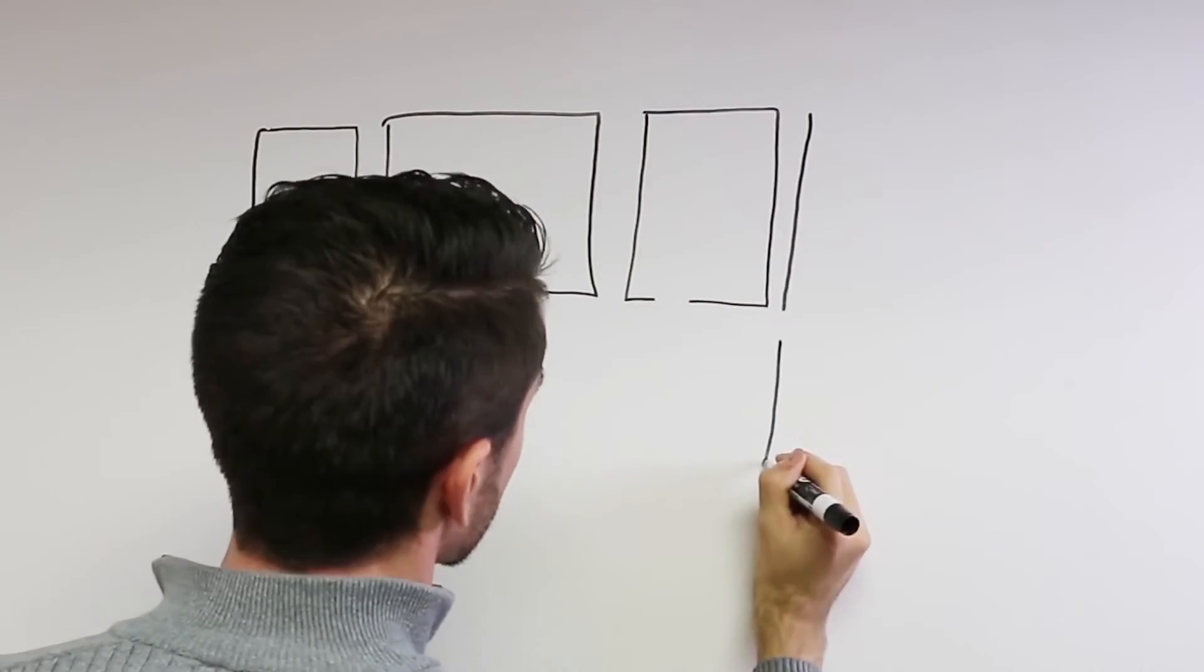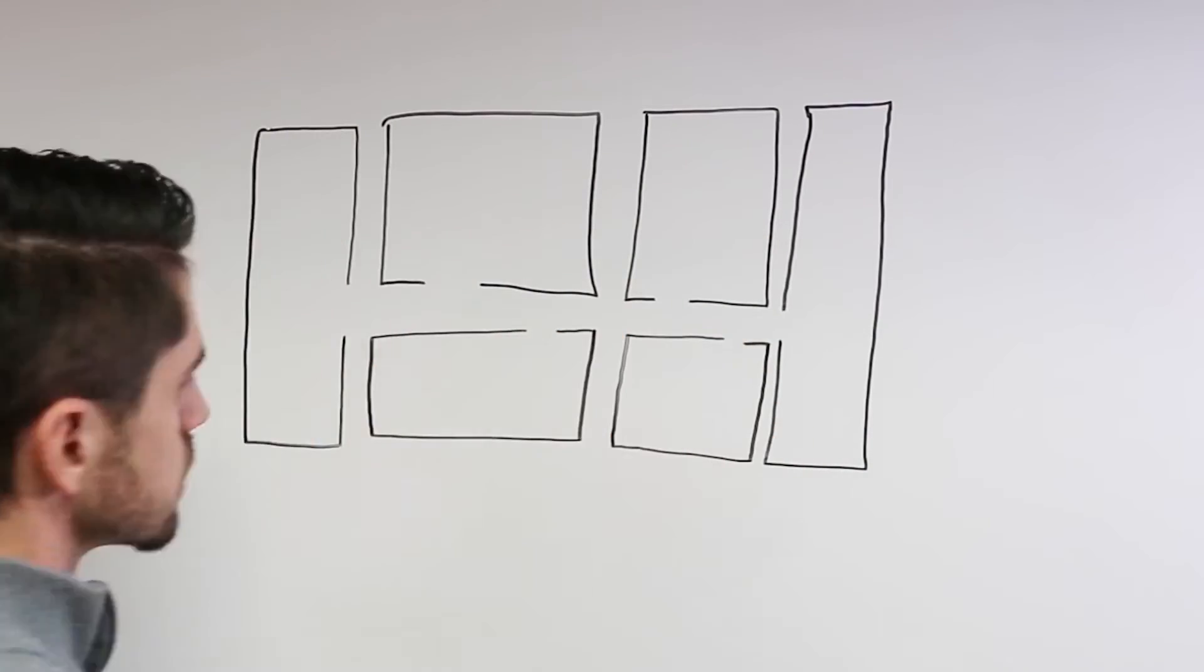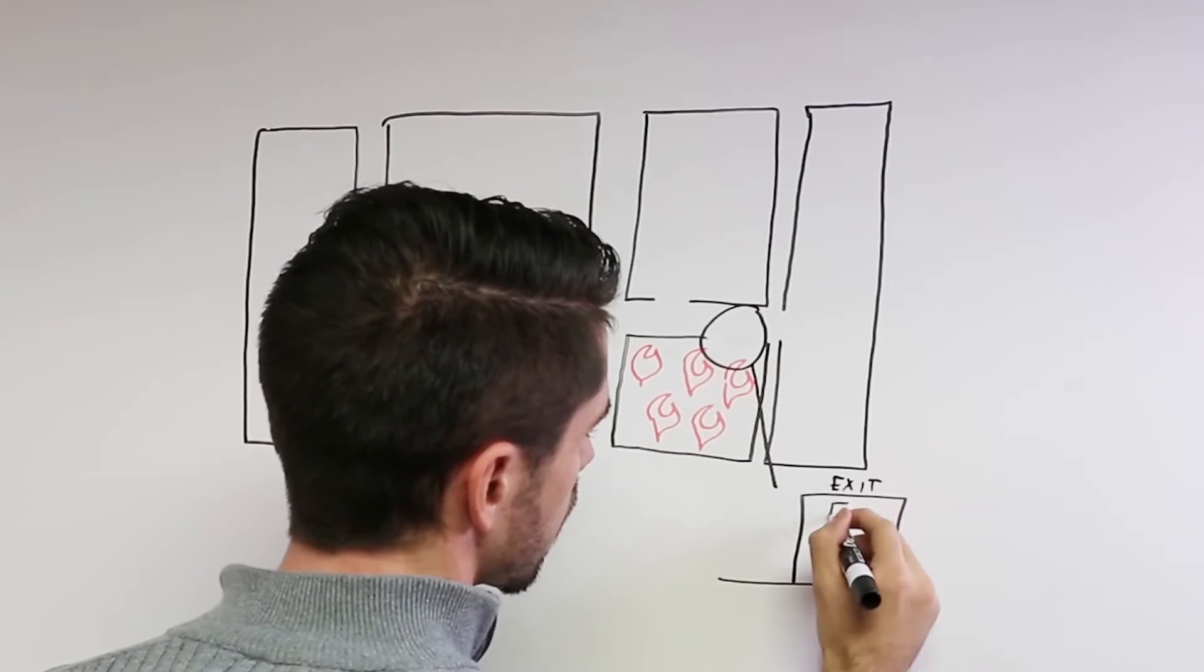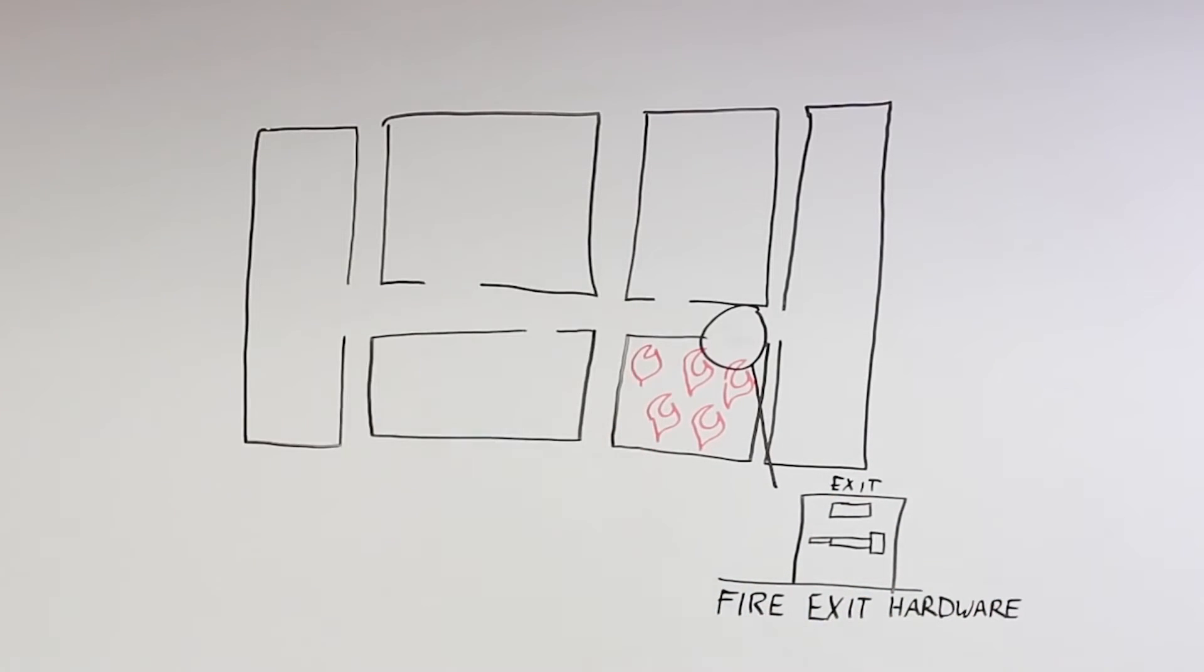If the codes require fire exit hardware instead of just regular panic hardware, it's because the codes are requiring the opening to be fire rated so that the opening slows the spread of smoke and or fire.